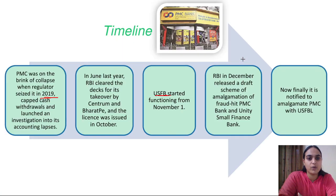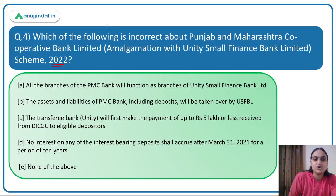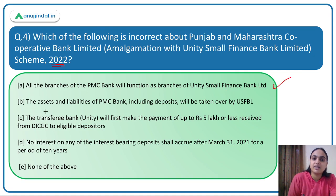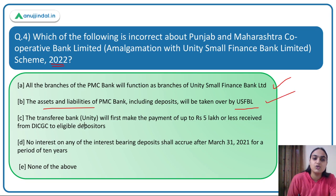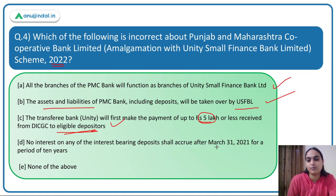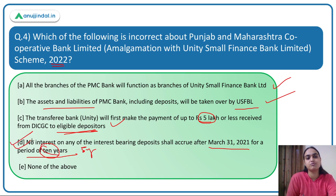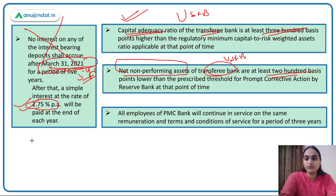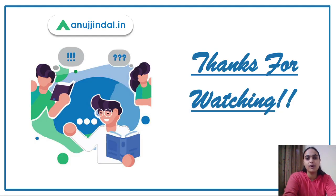Coming to the question — we have to identify the incorrect statement. All branches of PMC functioning as branches of Unity Small Finance Bank — correct. All assets and liabilities going to Unity Small Finance Bank — correct. Unity Bank making payment of 5 lakhs to eligible depositors received from DICGC — correct. No interest paid on interest-bearing deposits after 31st March for a period of 10 years — incorrect, it is 5 years, not 10. So the answer is option D. This was all for today's session. Thank you so much.